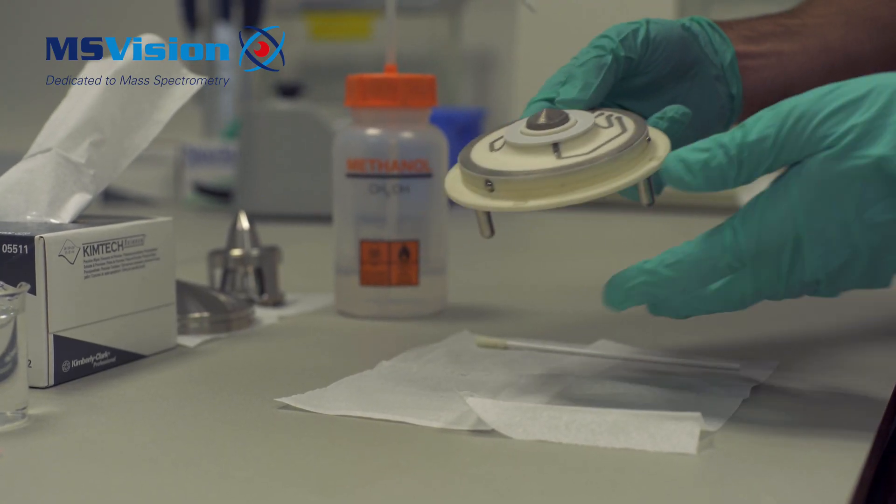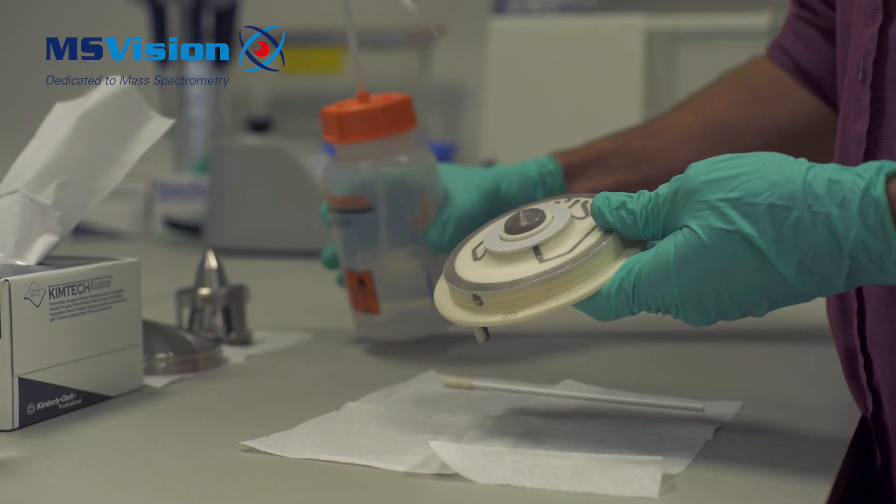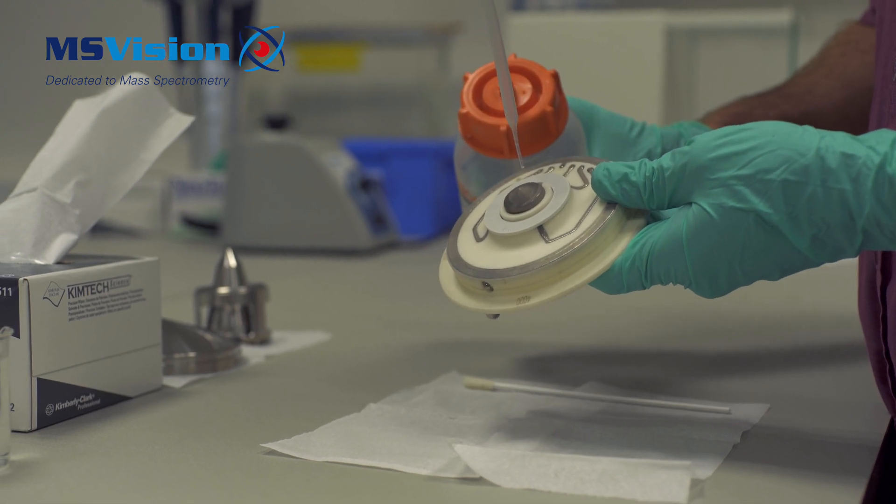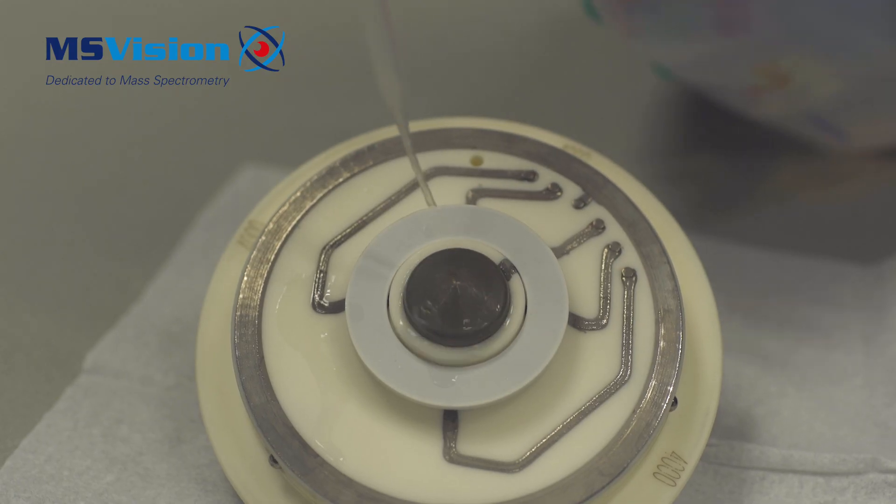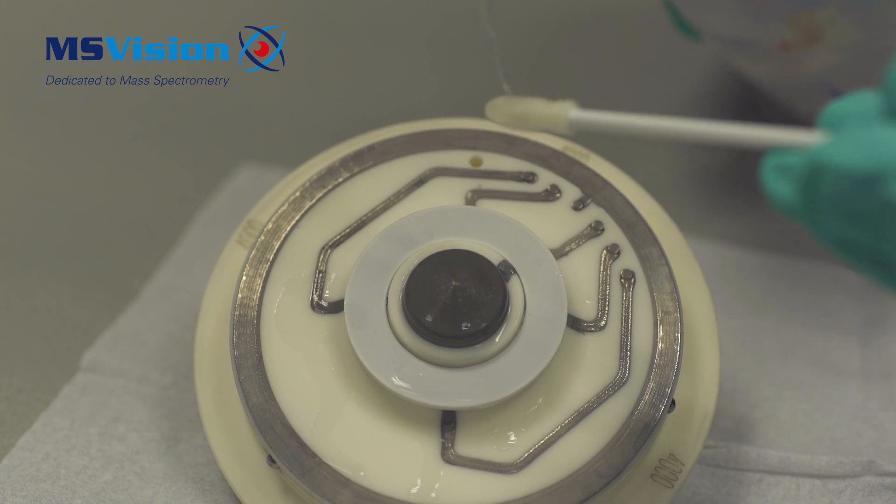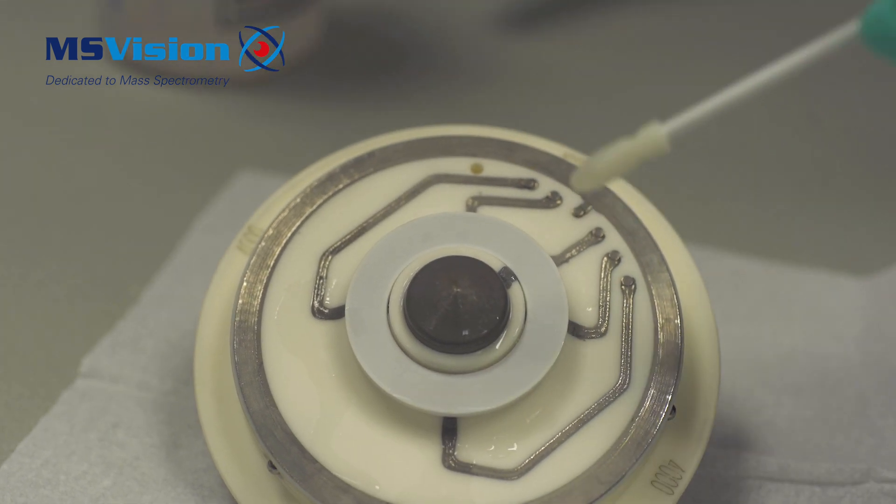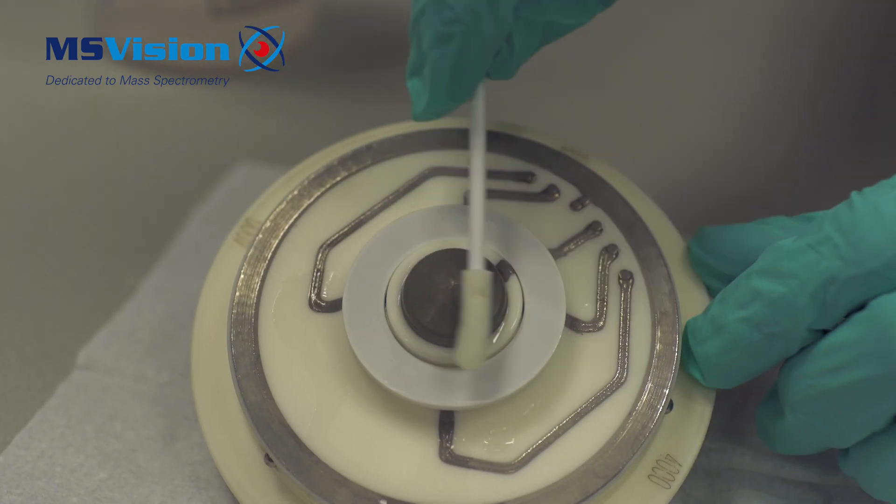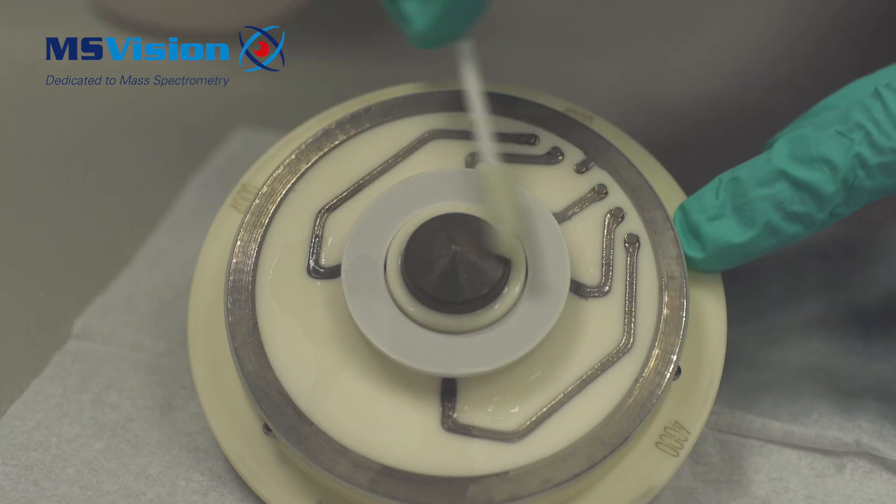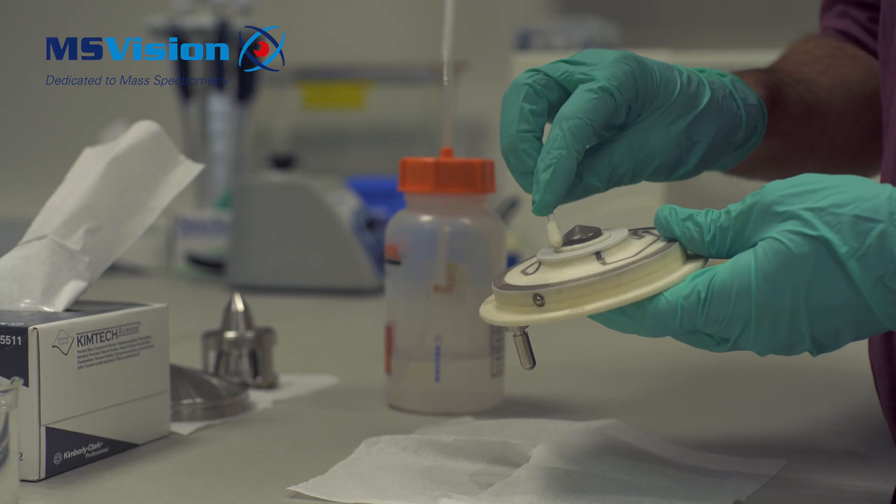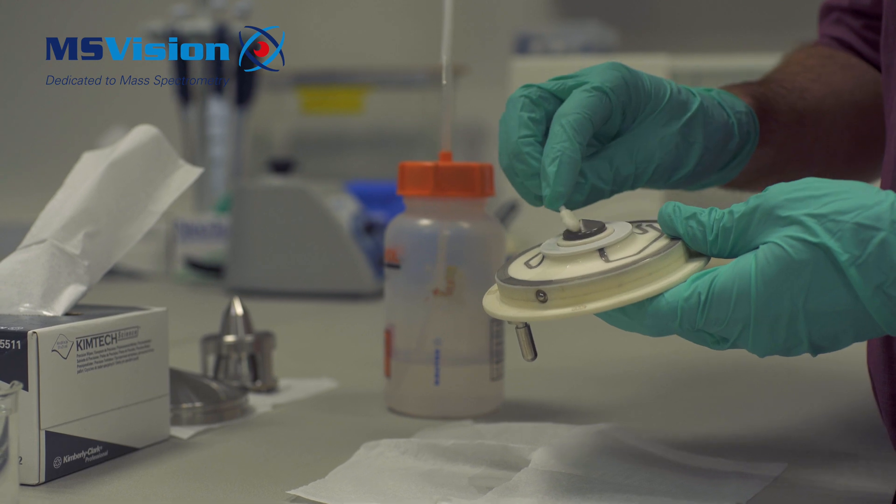Place the orifice plate onto a clean lint-free surface and squirt with methanol. Wipe with a swab or a lint-free wipe to remove any dust or hair blocking the orifice. Then squirt methanol through the orifice to make sure that all dirt has been removed and either dry with nitrogen or leave to dry.